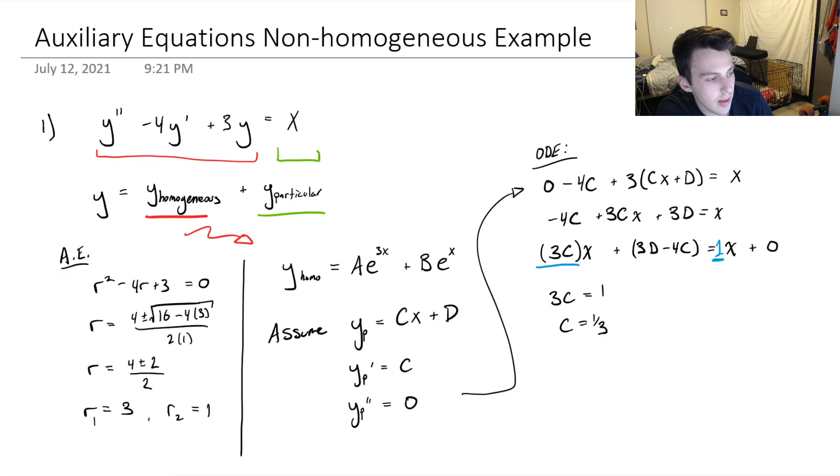And you might be thinking, okay, so C is 1 third, that means D can be anything. But that's not true. Because if D was anything, then this might not be true. 3D minus 4C, that needs to be equal to 0 as well. So we can't forget about that. So we've got 3D minus 4C equals 0.